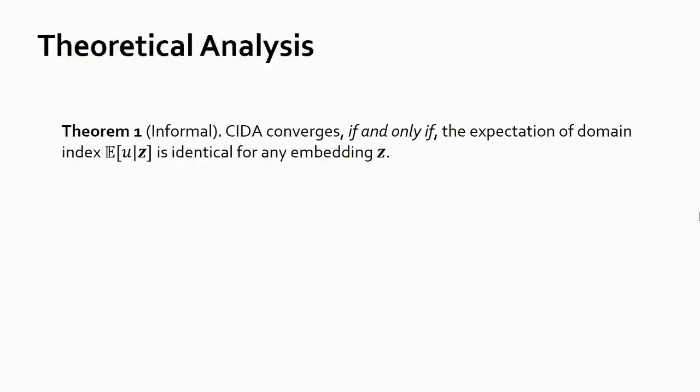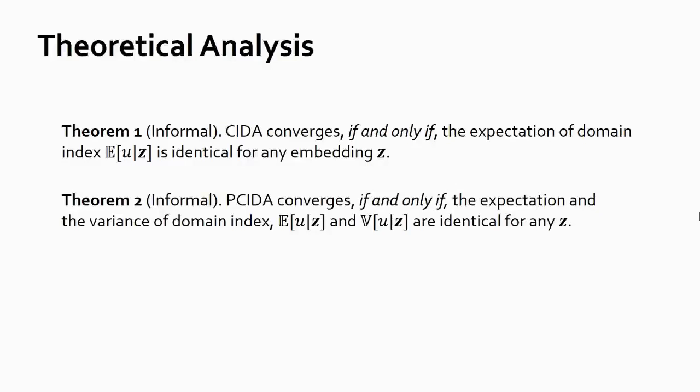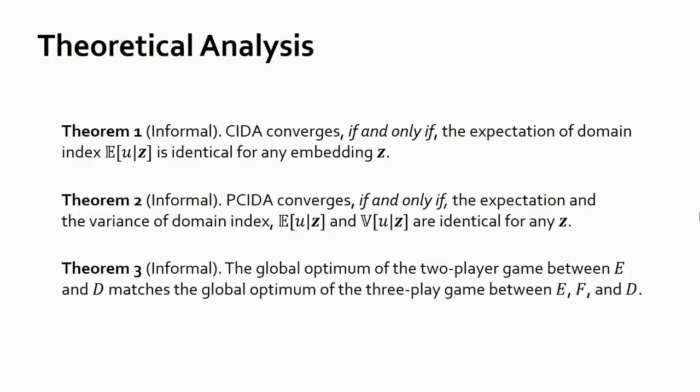In terms of theoretical analysis, we prove that CIDA matches the expectation of the domain index for any embedding z, and P-CIDA matches the expectation and variance for any z. More importantly, we also show that the global optimum of the two-player game between the encoder and discriminator matches the global optimum of the three-player game between the encoder, predictor, and discriminator. It basically says that we can train the encoder, predictor, and discriminator jointly, and achieve both perfect alignment and accurate prediction across all domains.